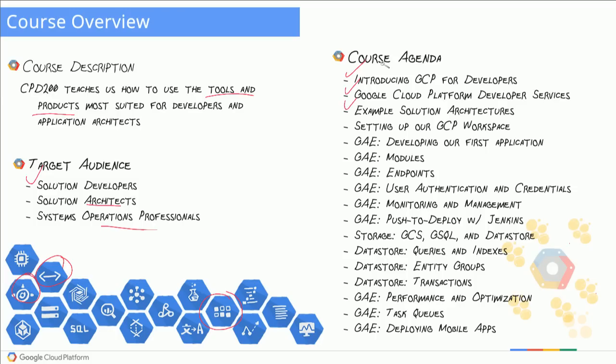We'll have some example architecture so you can see at a high level how solutions are architected on Google Cloud Platform. After that, we get into the meat of the nuggets — setting up our workspace and project inside Cloud Platform, developing and deploying an application, and learning about GAE modules. Modules inside Google App Engine are ways to develop separate independent applications that run inside the same App Engine instance.